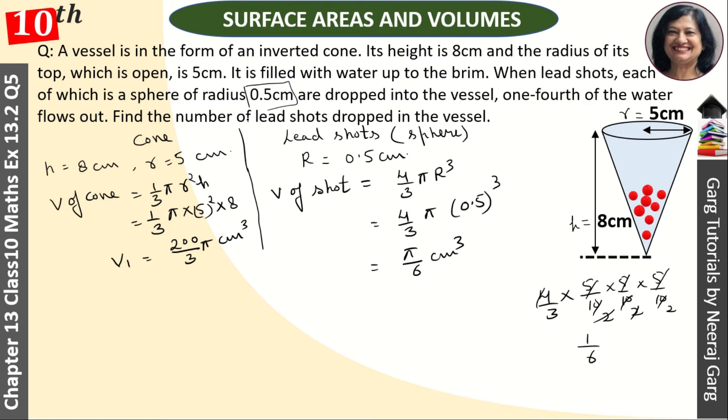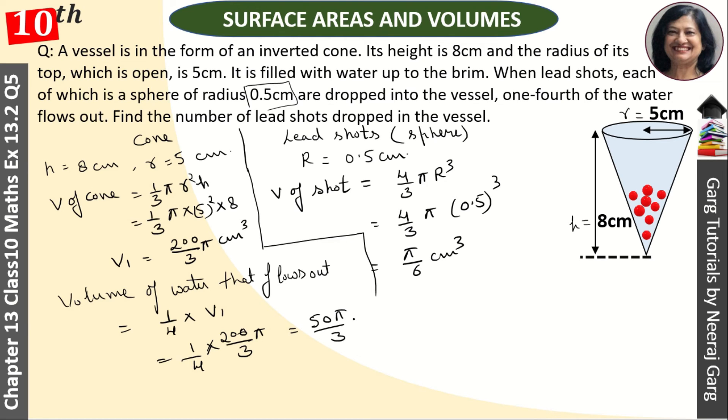Now volume of water that flows out: Volume of water that flows out is equal to one-fourth of volume of cone. So that is 1 upon 4 into 200 upon 3 pi. So we have 50 pi upon 3 centimeters cubed. This volume of water, 50 pi upon 3, which equals the total volume of lead shots we have put into the water.